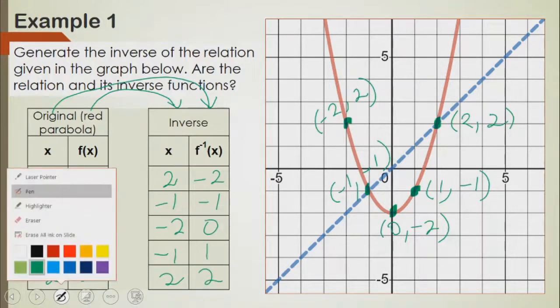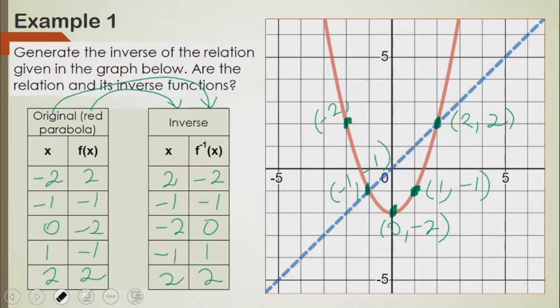Now we need to plot the switched points back on the graph. This is point (2, negative 2). So x is 2, and y is negative 2. That's that point. Then x is negative 1, y is negative 1.